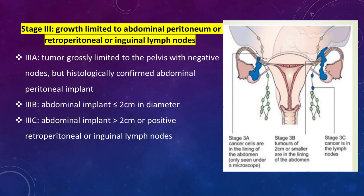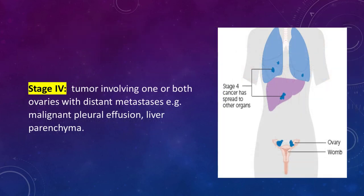In stage 3, when we open the abdomen there is gross pelvic tumor with gross metastasis to the peritoneal wall in the abdomen. Stage 4 involves one or both ovaries with distant metastasis, such as metastasis to the liver parenchyma or malignant pleural effusion indicating lung metastasis. Importantly, liver parenchyma involvement is stage 4, while the liver capsule or peritoneal covering is stage 3.